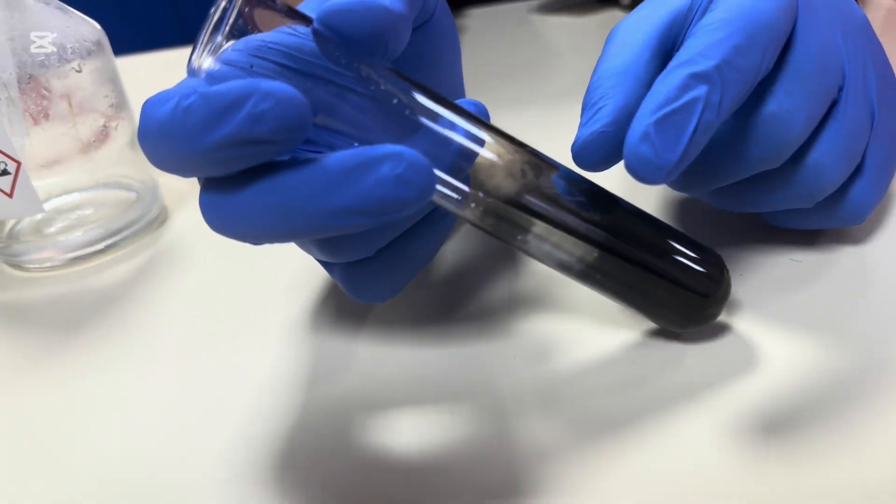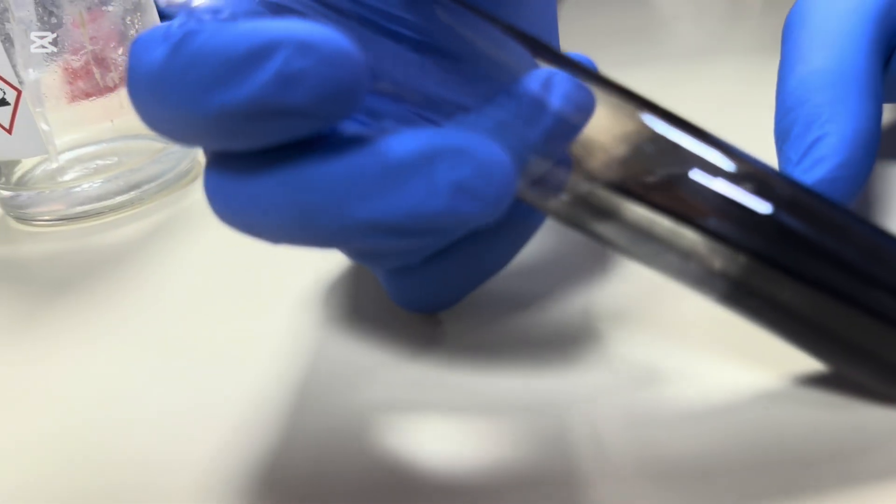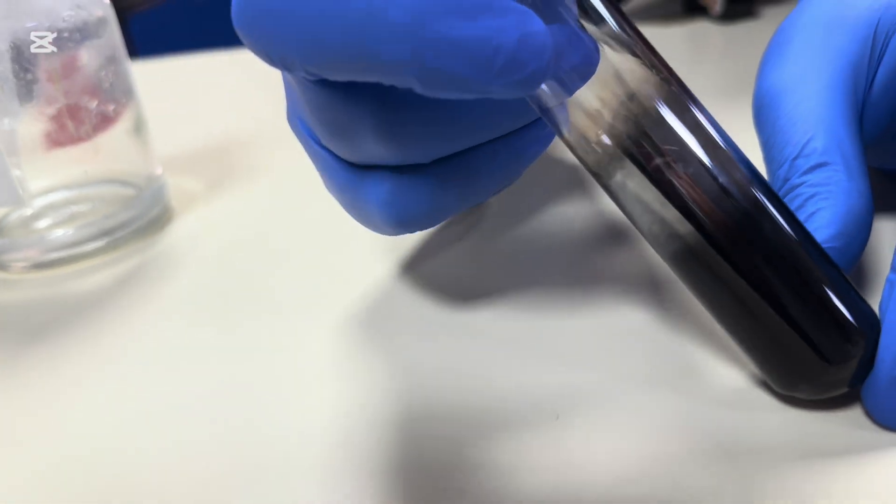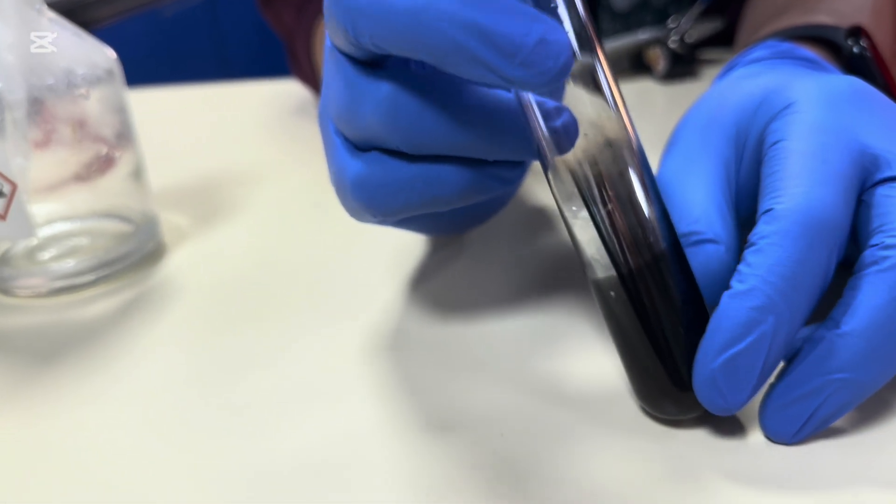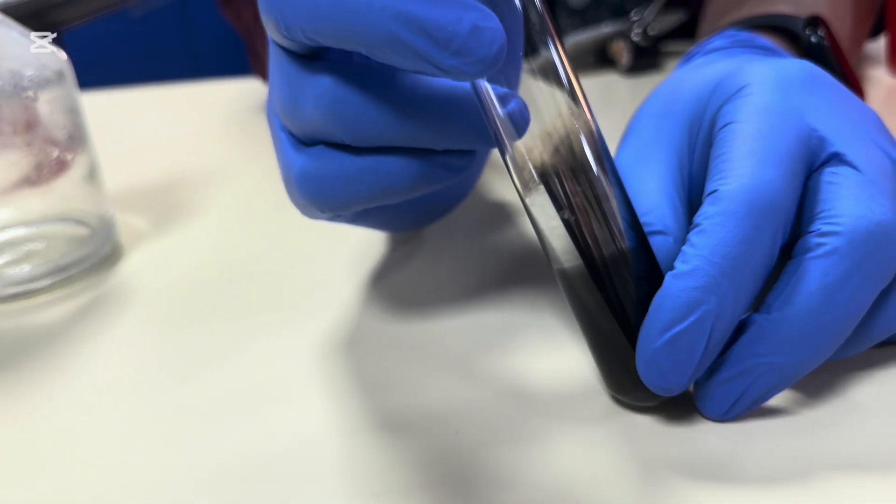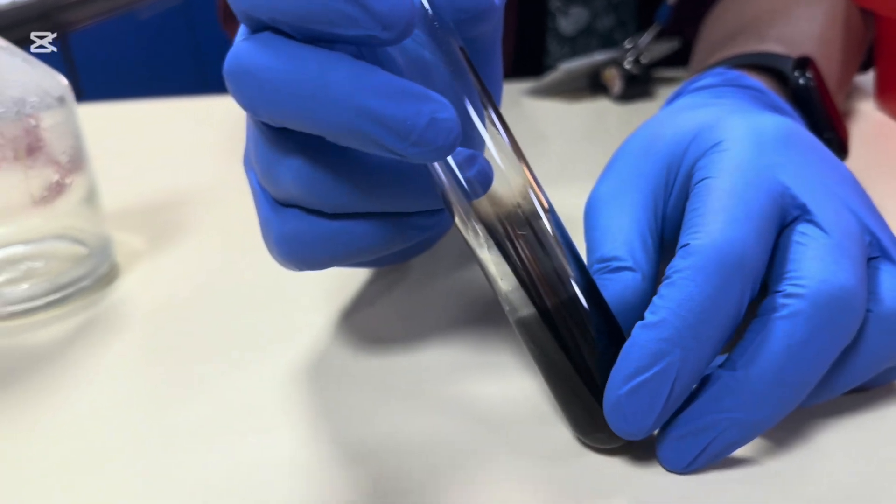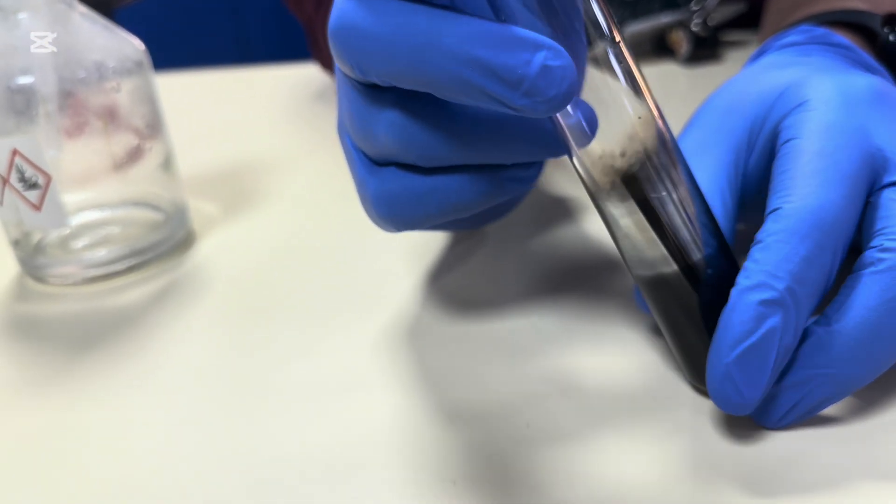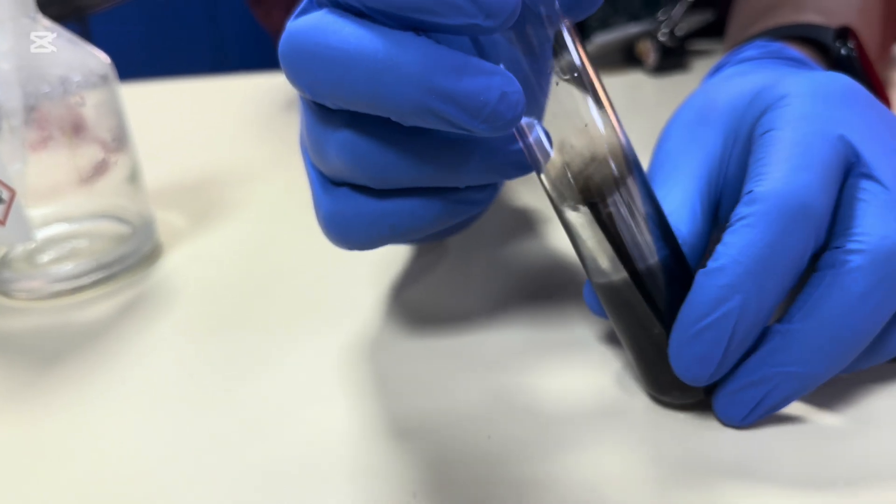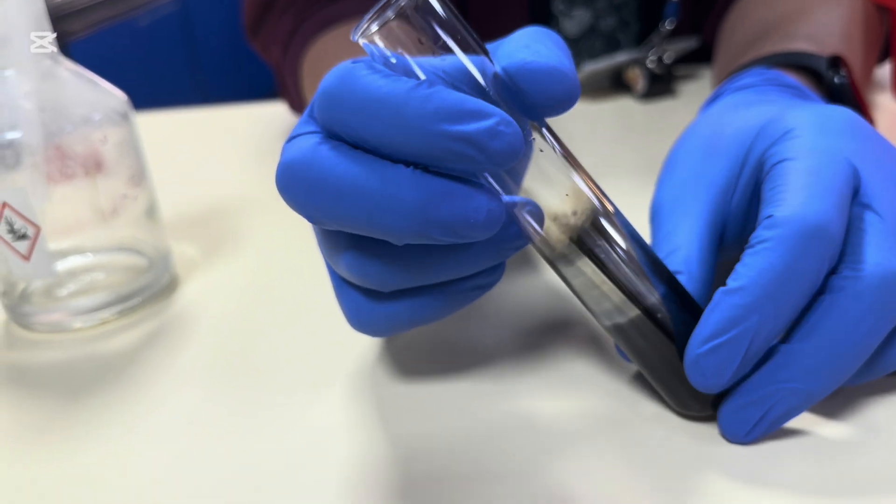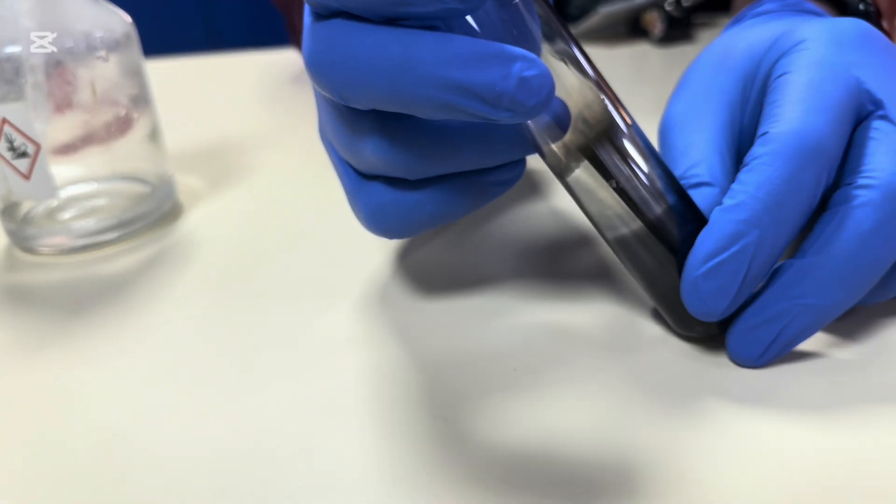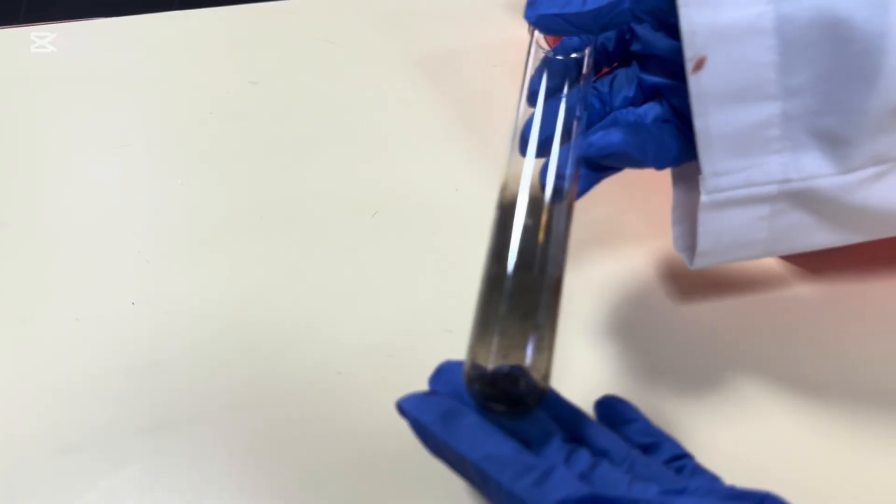But it's what's forming here that's very interesting. Can you see anything? Yeah, the silver on the walls. Silver. So it's like a mirror. Hence the name silver mirror test. So this is complementary test that there is the aldehyde from our mixture. Very cool.